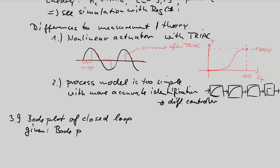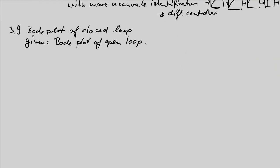Given the Bode plot of the open loop — this is important if we don't know the transfer function. Note that the Bode plot is only the fingerprint of the transfer function. The transfer function of a system contains complete information, while the Bode plot is just a small part of that information. Can I use the small part of information of the open loop to get the small part of information of the closed loop? The answer is yes, it is possible.